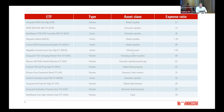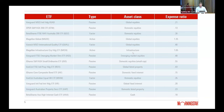On whether an ETF with 40 companies is better than tracking an index: it depends on which 40 companies. Remember that an index, even with 200 names, is often very top-heavy. If you buy the ASX 200, roughly 100 of those shares don't really matter — they could triple and it would have no effect on your ETF return because the allocation to each is so small.